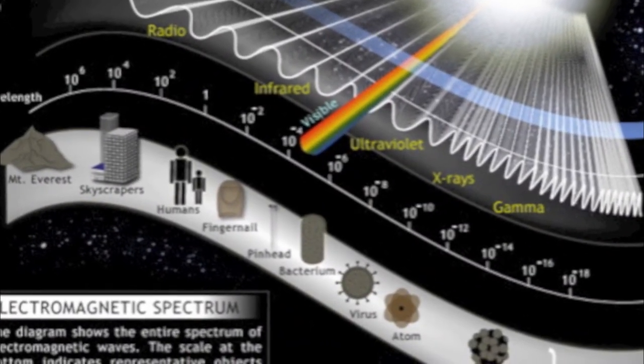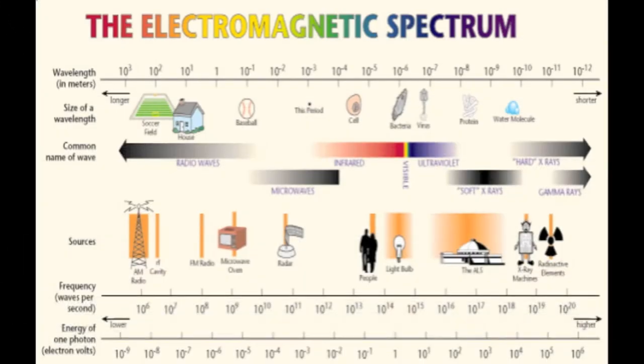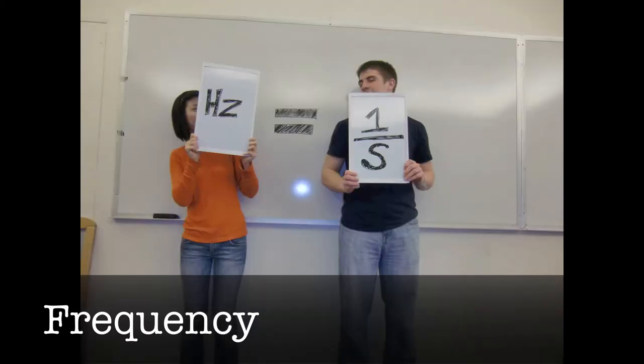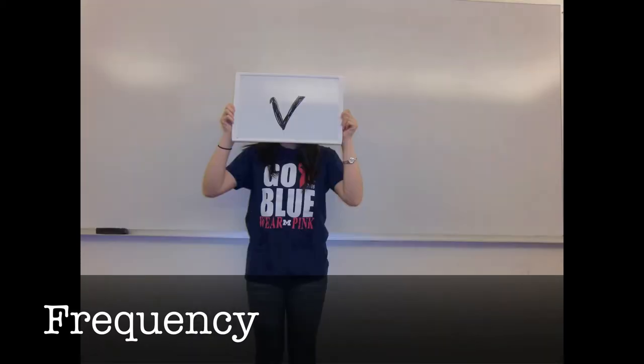The electromagnetic spectrum is the range of frequencies and wavelengths of electromagnetic radiation. Frequency is symbolized by the Greek letter nu, measured in hertz or one over seconds. It is the number of wavelengths that pass a fixed point in one unit of time.